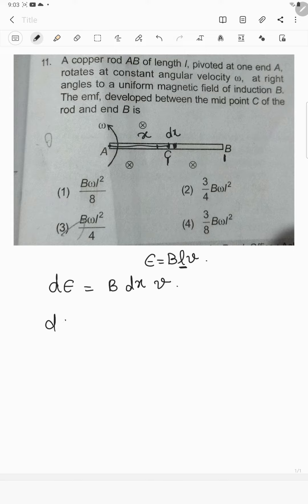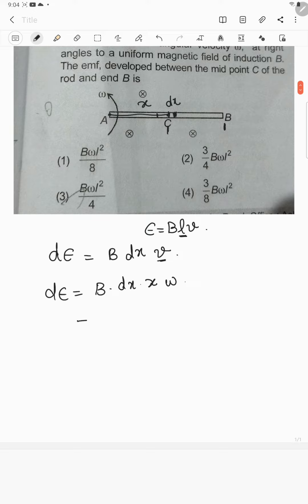Then DE will be written as B into DX into what is velocity? Velocity is R into omega isn't it? So here I can write X into omega. X into omega will be my velocity. So hence you have B omega into X DX.